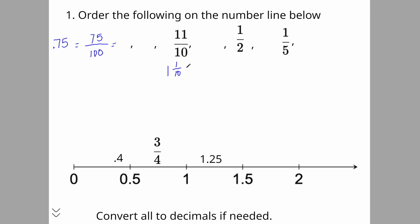One and one tenth — think of it in terms of money. If I have $1 and one dime, that would be a dollar and 10 cents. So 11 over 10 is equal to 1.1 or 1.10.